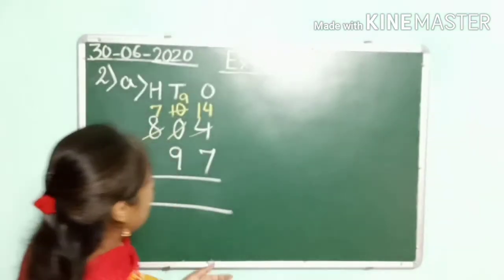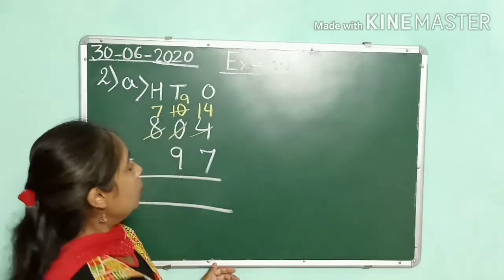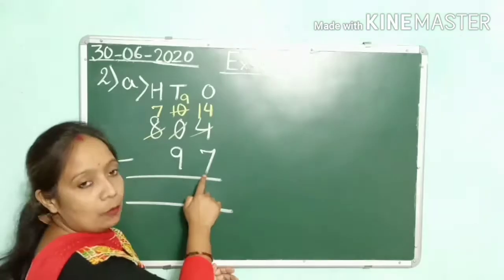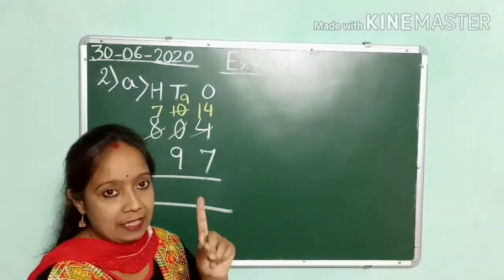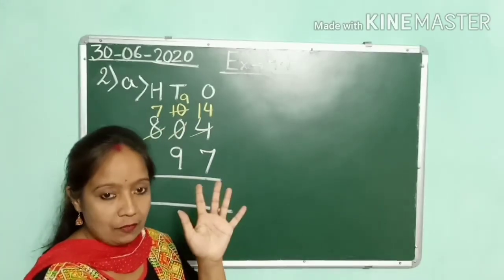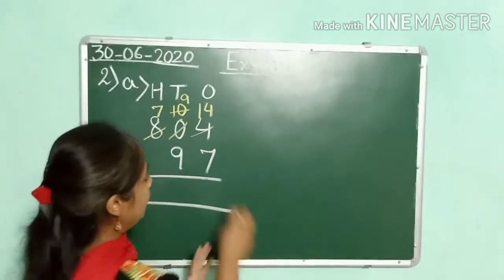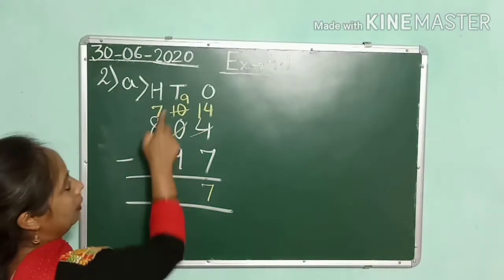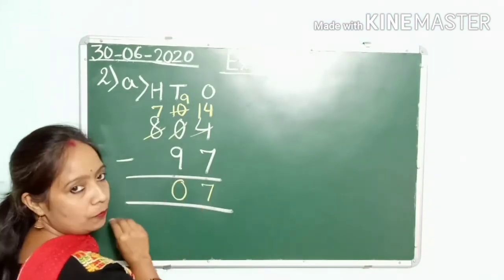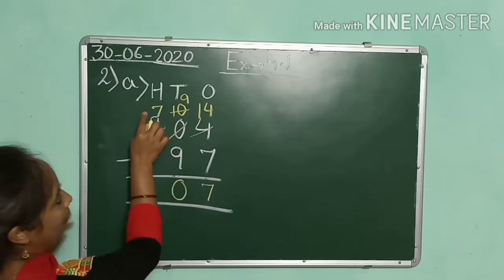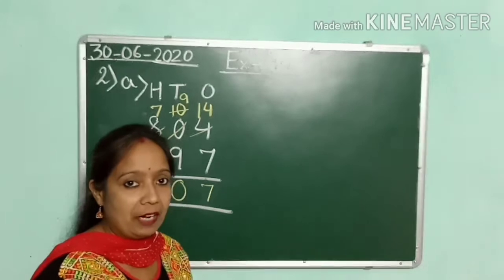Now just start the subtraction: 14 minus 7. Start counting after 7 till 14 — 8, 9, 10, 11, 12, 13, 14. How many? 7. So you write here 7. Now 9 minus 9 — we are subtracting the same digits — 9 minus 9 is 0. And under the 100s column we have 7, with no digit below, so 7 will be 7. Our answer is 707.